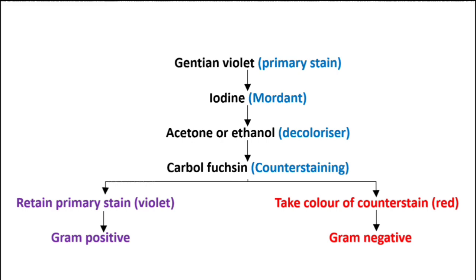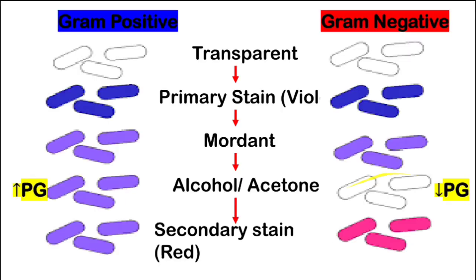After this, some bacilli are stained with purple or violet color — these become Gram positive — and some with red or pink color — these become Gram negative. Initially all bacilli are transparent; we add primary stain so all are stained. Then we add mordant, which makes a complex with the peptidoglycan layer. The counterstain is taken up by the Gram negative bacteria, giving them a pink or red color.